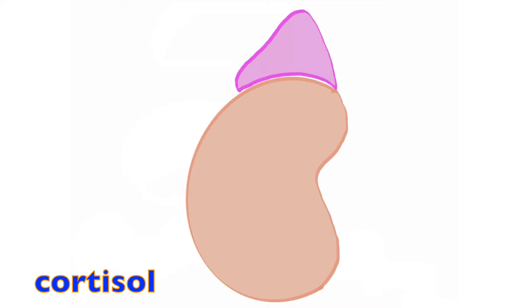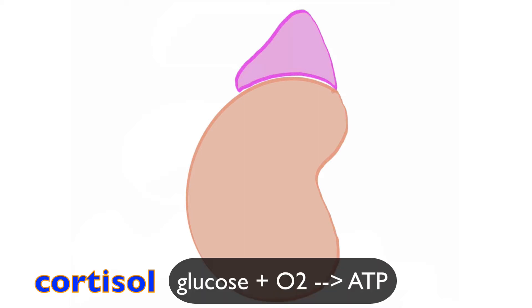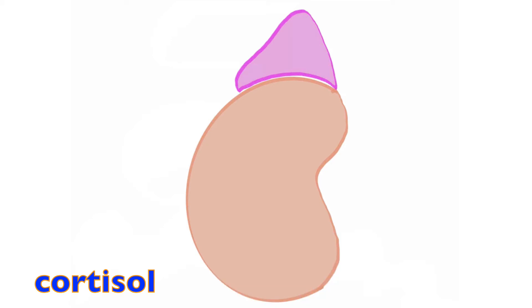This should make sense, because as we've talked about before, a key equation known as cellular respiration couples oxygen with glucose to make ATP, which is significantly important during times of stress.